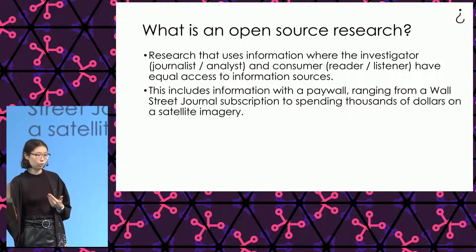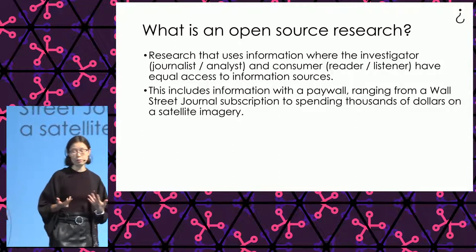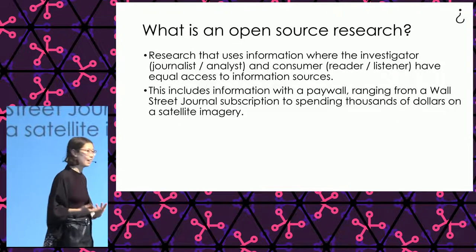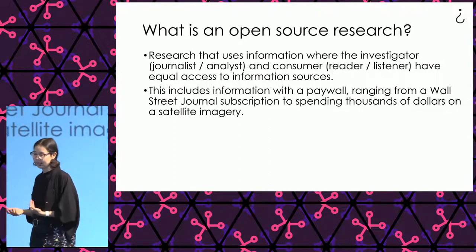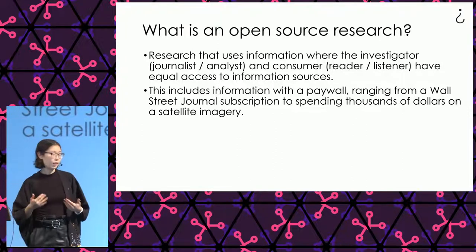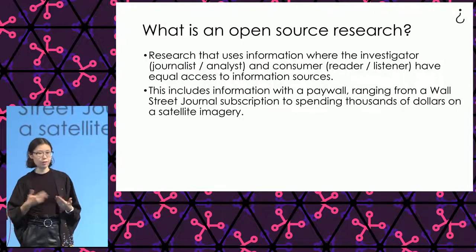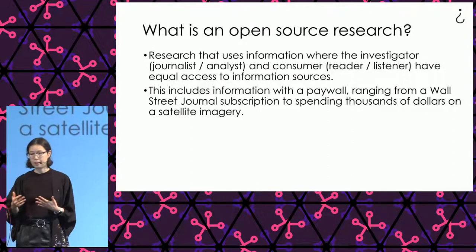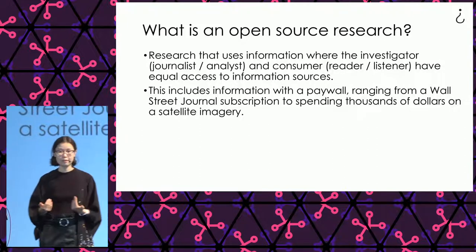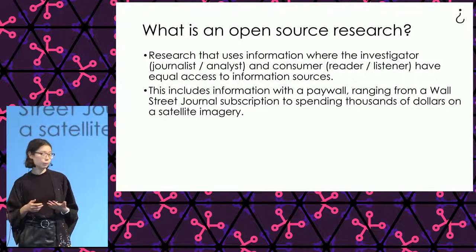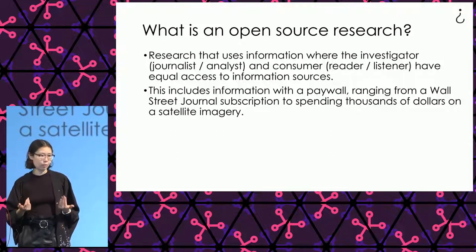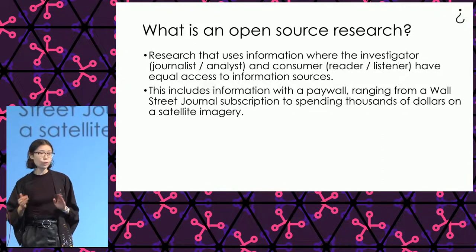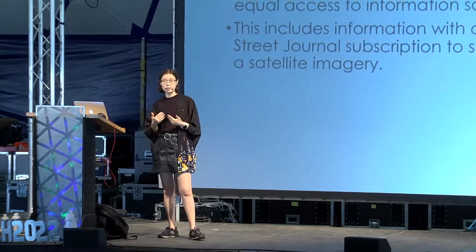The researcher — whether a journalist, analyst, or investigator — has the same access to information as the reader. We also include information with a paywall as open source. This can be a subscription to a news channel, like the Economist or Wall Street Journal. If someone has already written about the subject, we subscribe and read it — it's open source because everyone with a budget can access it.